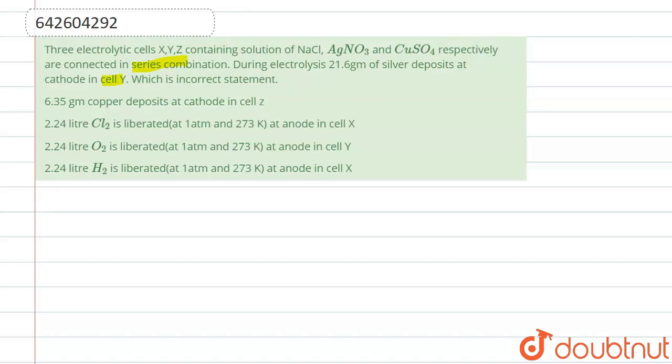Let us see the first statement, which is 6.35 gram of copper deposits at cathode in cell Z. For that, what we need to do is we need to find electricity first. Finding electricity can be done by Faraday's law.